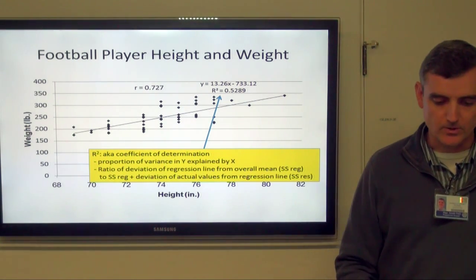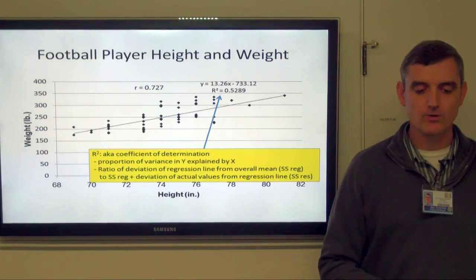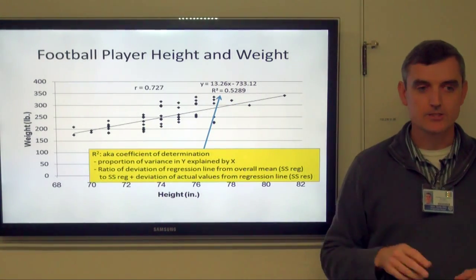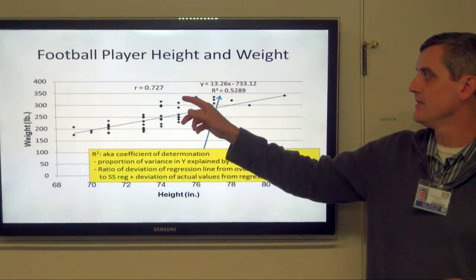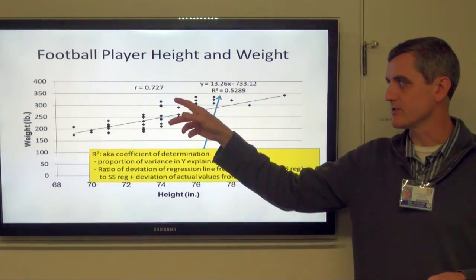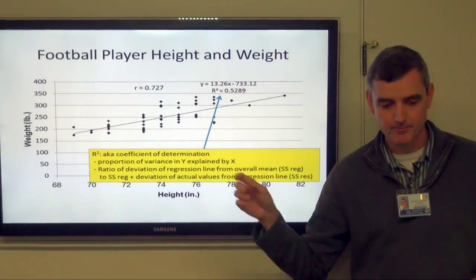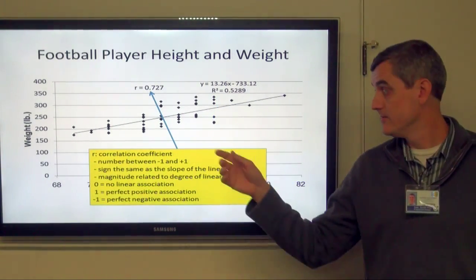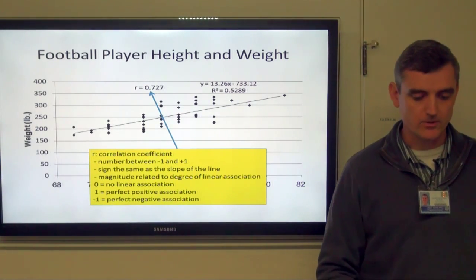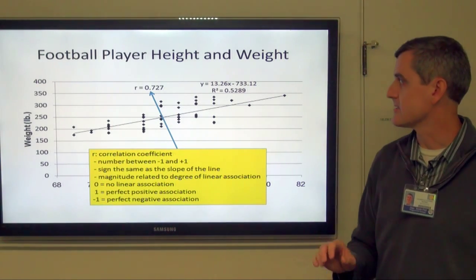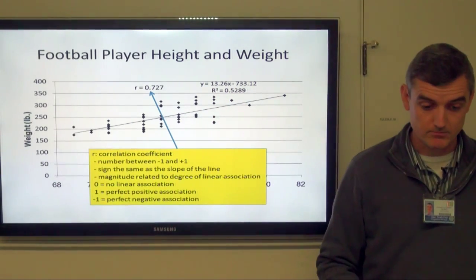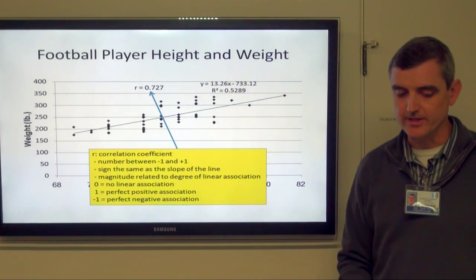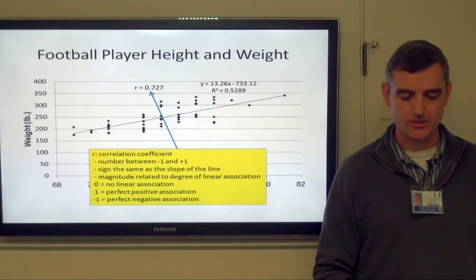r squared is the coefficient of determination — the proportion of variance in y explained by x. It's the ratio of the deviation in the regression line from the overall mean to that plus the deviation of the observations to the point on the line. r is the correlation coefficient between negative 1 and positive 1; the sign is the same as the slope (positive 13, positive r), and the magnitude is related to how close the association is.